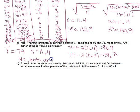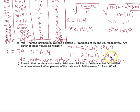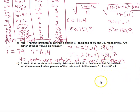So are either of the values 56 or 94 significant? No — both are within two standard deviations of the mean. If one of the given values were 50, we would say yes, 50 is significantly low because it's more than two standard deviations below the mean. If it had been 98, we would say 98 is significantly high because it's more than two standard deviations above the mean.